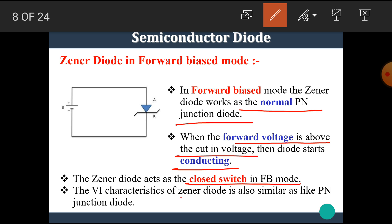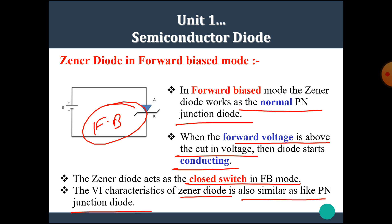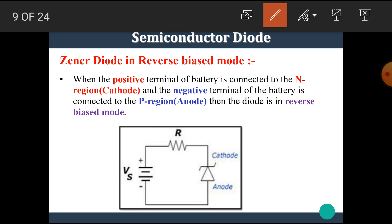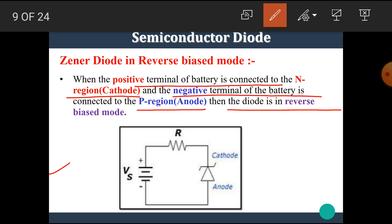The VI characteristics of the Zener diode in forward bias mode are similar to those of the PN junction diode. However, the reverse characteristics of the Zener diode are slightly different from the normal PN junction diode. In reverse bias mode, the positive terminal of the battery is connected to the N region (cathode) and the negative terminal is connected to the P region (anode), putting the diode in reverse bias mode.